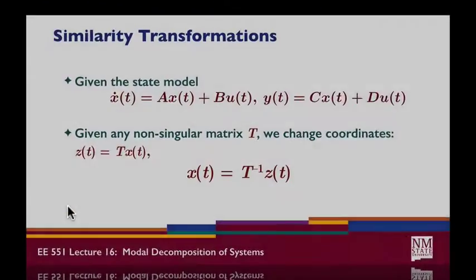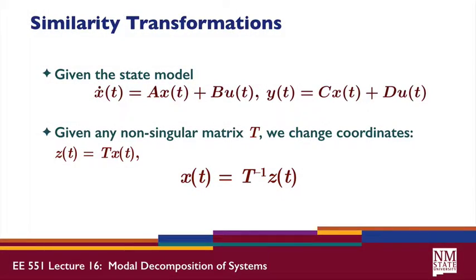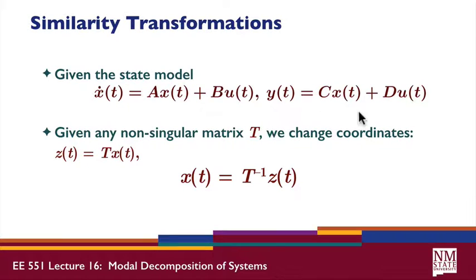We've talked about similarity transformations before, so let's review what we're talking about here. Given a continuous-time state space model, X dot is equal to AX plus BU, and Y is equal to CX plus DU.